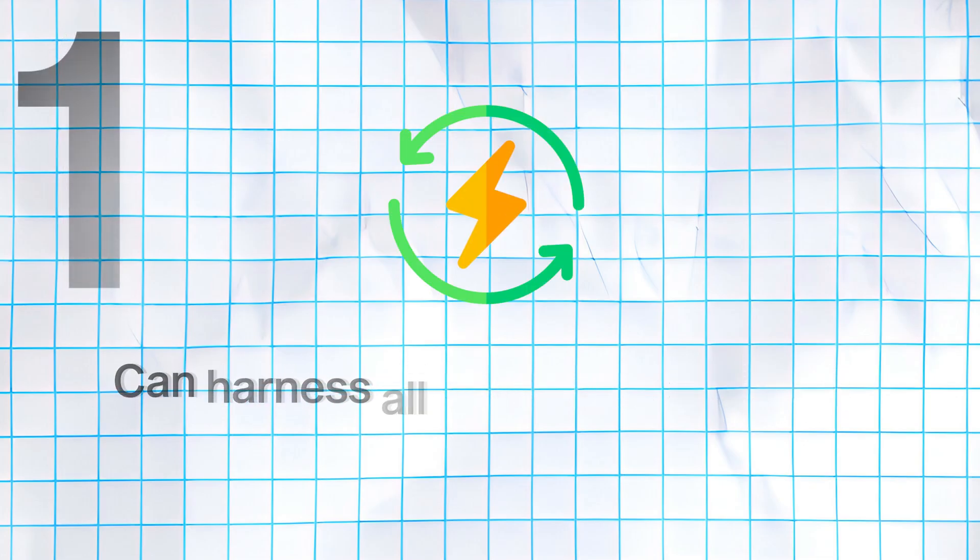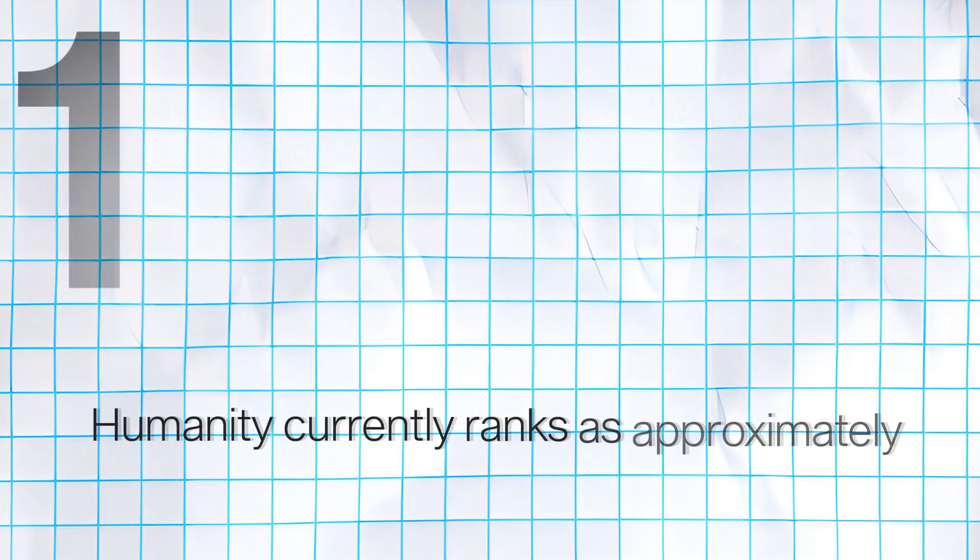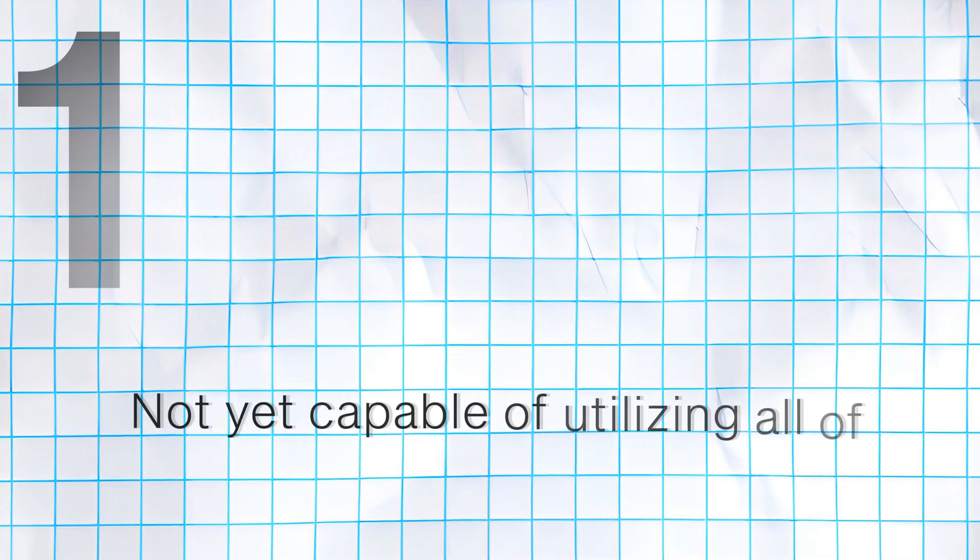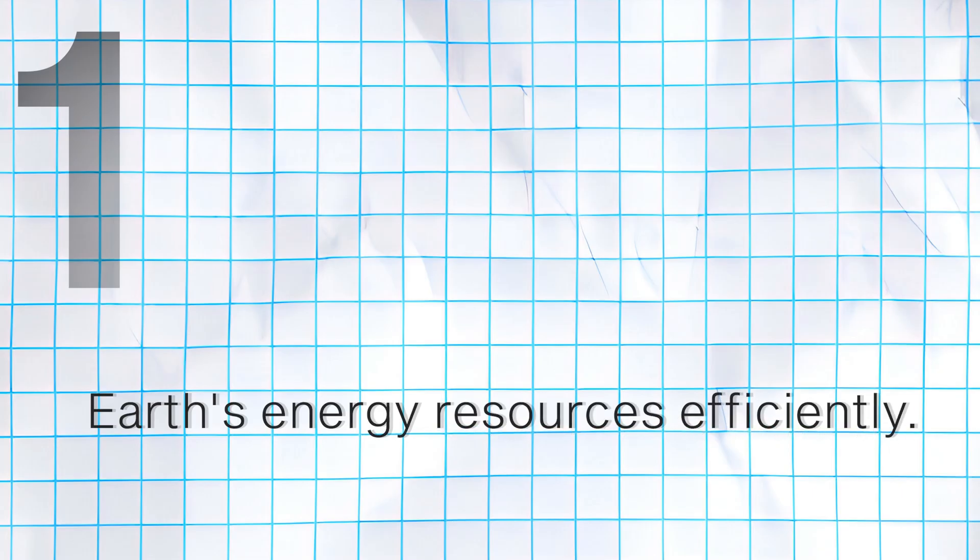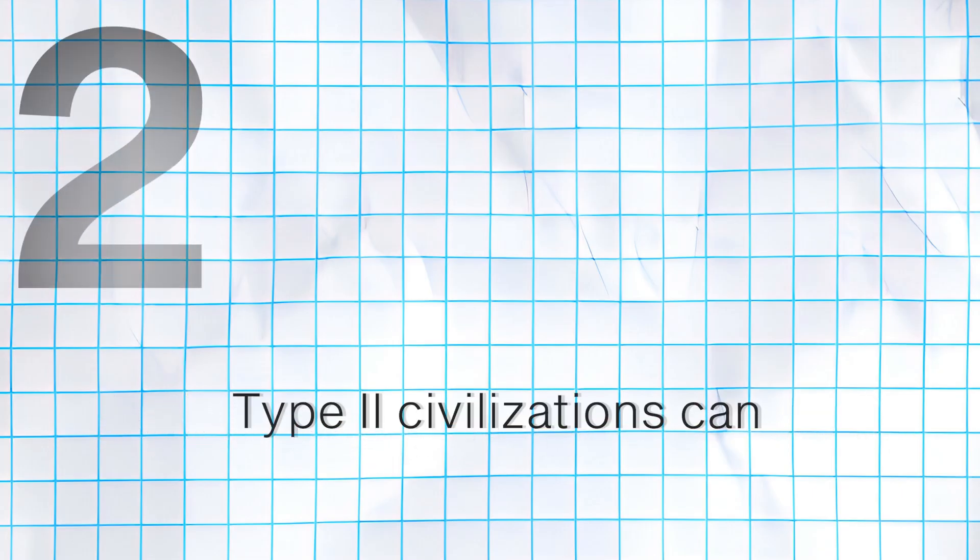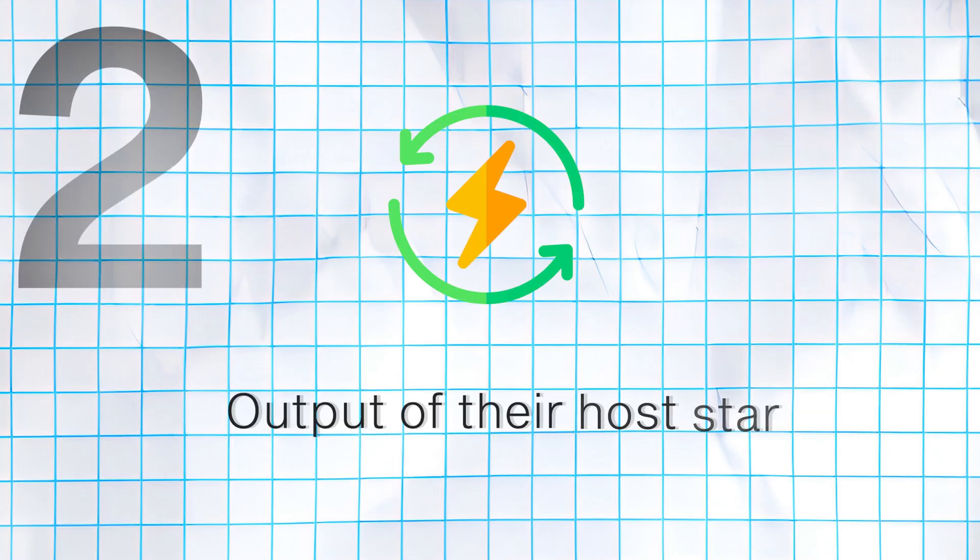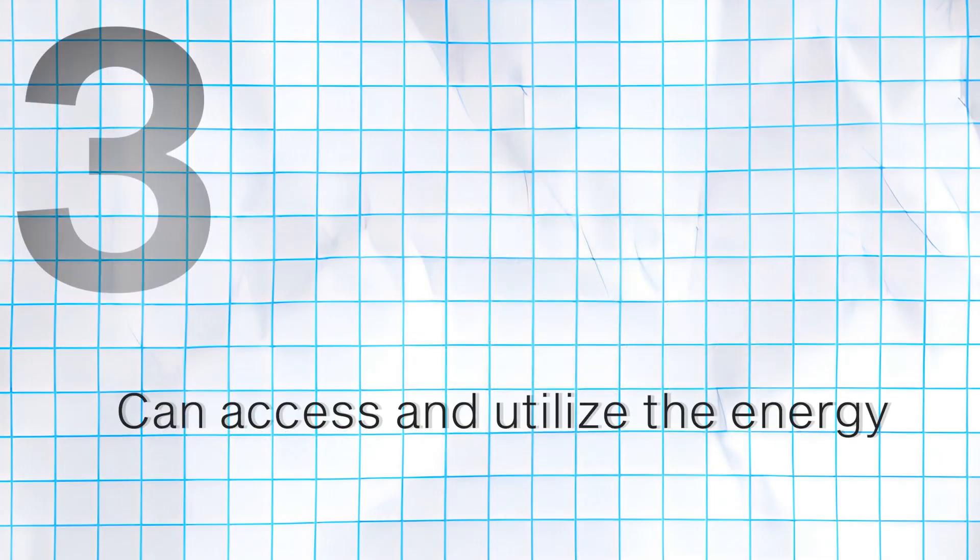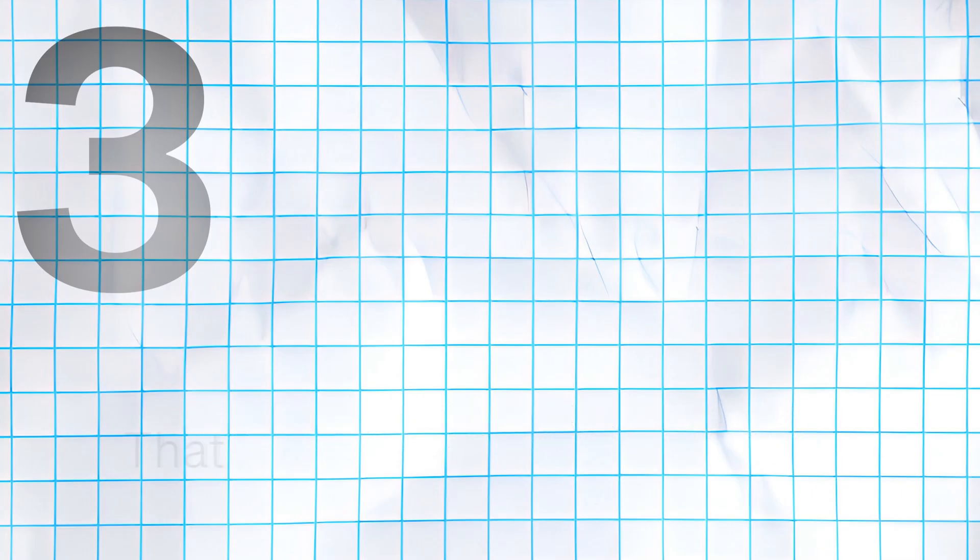Type 1 civilizations can harness all the energy available on their home planet. Humanity currently ranks as approximately a Type 0.7 civilization, not yet capable of utilizing all of Earth's energy resources efficiently. Type 2 civilizations can harness the entire energy output of their host star, possibly through megastructures like Dyson spheres that capture stellar energy on a massive scale. Type 3 civilizations can access and utilize the energy of entire galaxies, representing a level of technological advancement that is almost incomprehensible to current human understanding.